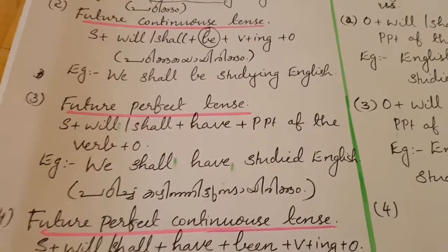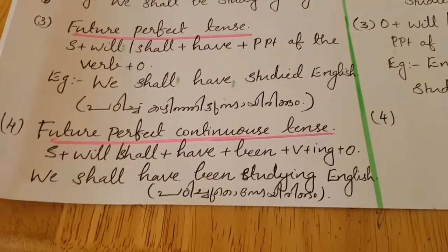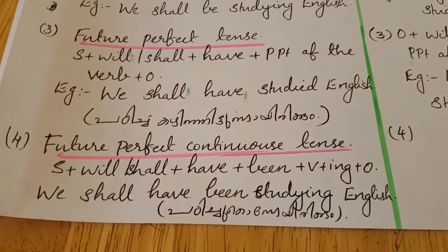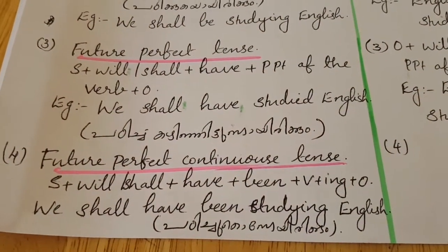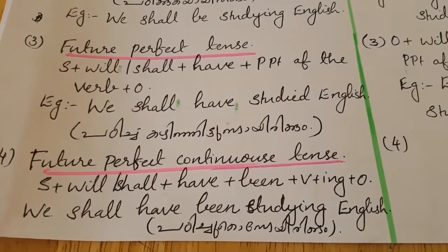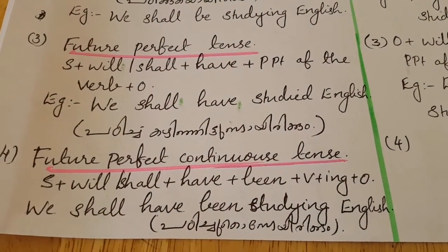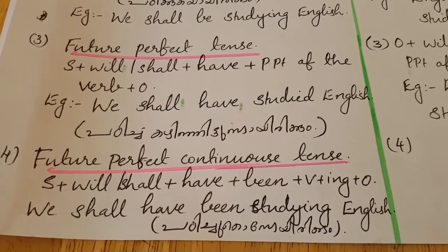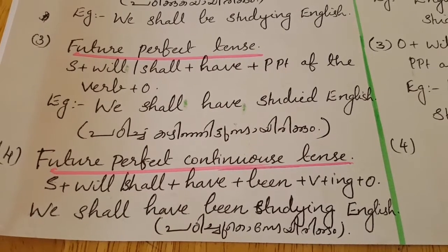And for future perfect continuous tense, the formula is subject plus will or shall plus have plus been plus ing-form of the verb plus object.